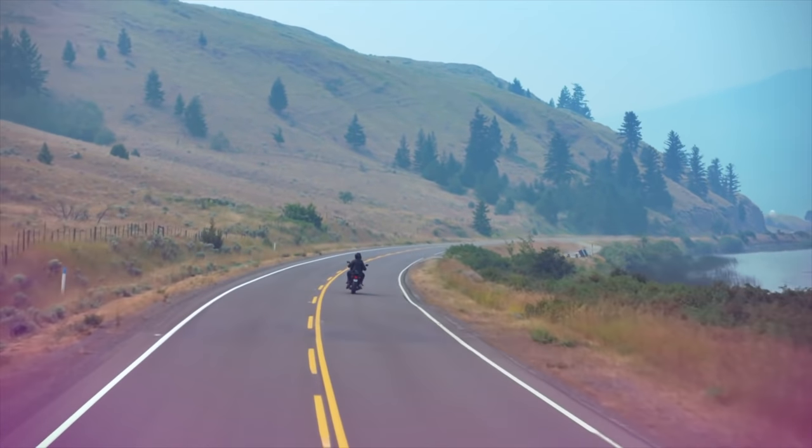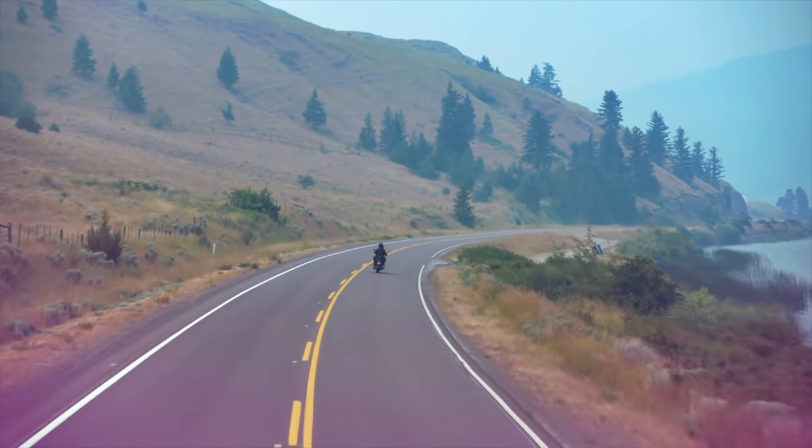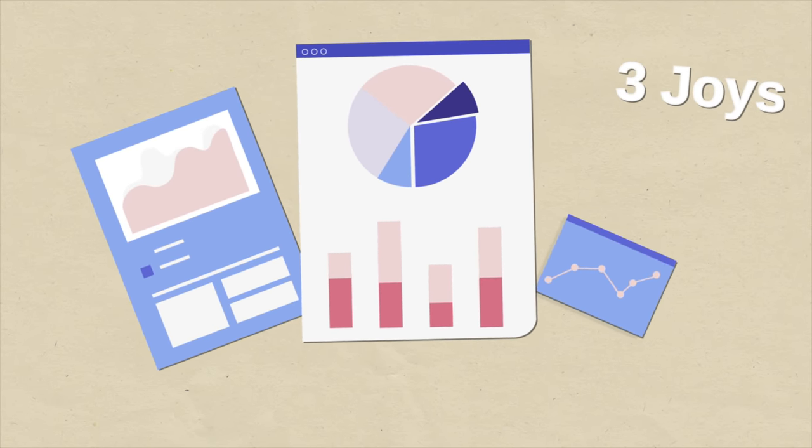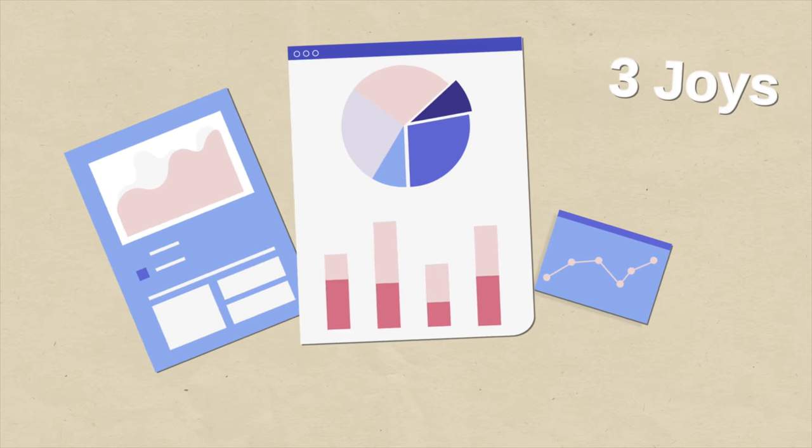He writes an essay in the Honda monthly magazine for his employees. It's called The Three Joys. Eventually, it will become immortalized as the company's principles. What are the three joys?